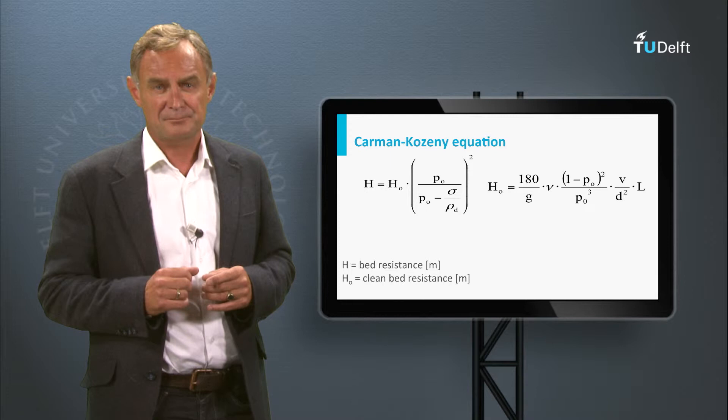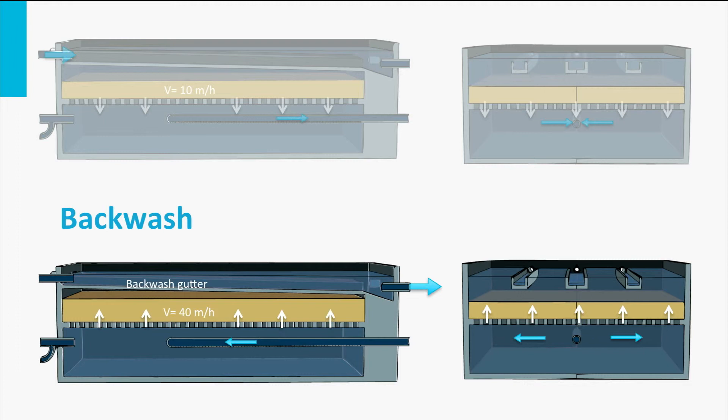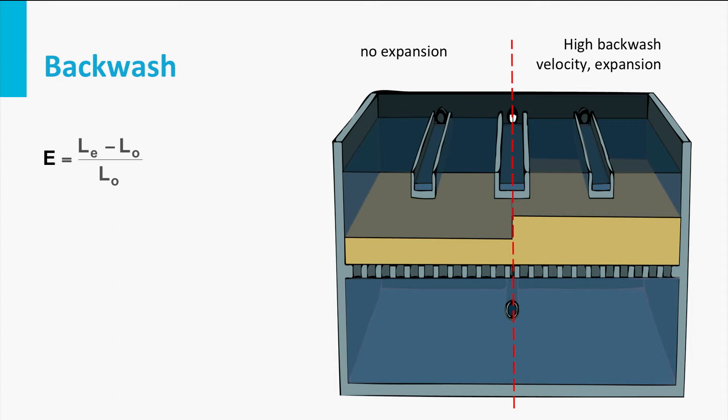When the filter is clogged, it must be backwashed to remove accumulated solids. This is done by briefly reversing the flow at a high enough rate that the bed becomes fluidized. Bed expansions of up to 20% can be reached. Extra air is often used to scrub the filter grains for more efficient washing. Bed expansion is an important parameter for designing a backwash facility, and the porosity during expansion can be calculated when the initial porosity and bed heights during filtration and backwashing are known.